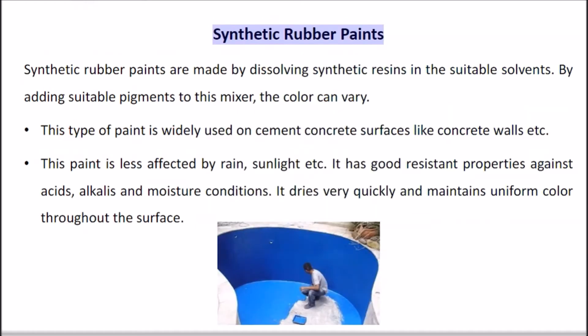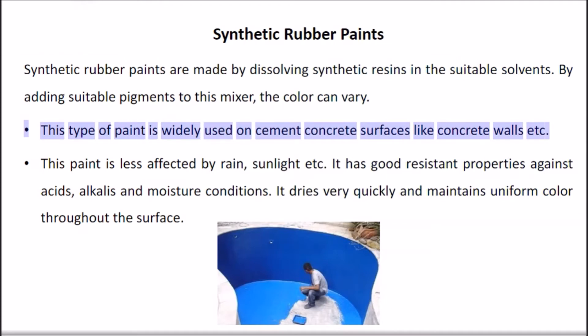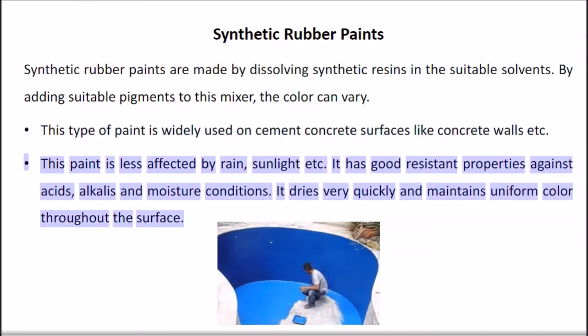Synthetic rubber paints are made by dissolving synthetic resins in suitable solvents. By adding suitable pigments to this mixture, the color can vary. This type of paint is widely used on cement concrete surfaces like concrete walls. This paint is less affected by rain and sunlight, and has good resistant properties against acids, alkalis, and moisture. It dries very quickly and maintains uniform color throughout the surface.